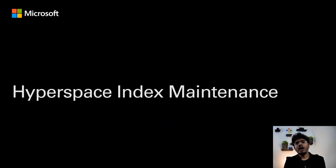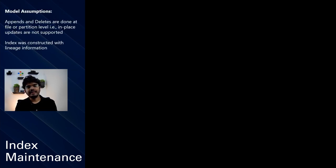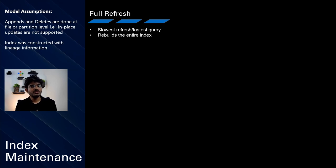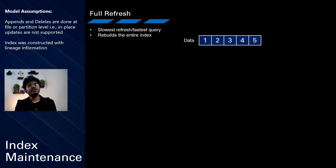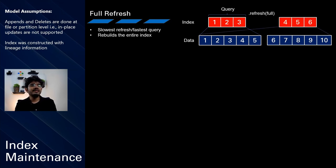Let me now tell you briefly about how index maintenance works inside Hyperspace. The index maintenance mechanisms make a fundamental assumption: changes to the underlying dataset happen either at the file or partition level. Hyperspace offers three forms of refresh. The first, which is the slowest but offers the fastest query performance, is the full refresh mode, because it goes ahead and builds the entire index. When you invoke full refresh, it rebuilds the entire index so that the next query uses the new version.